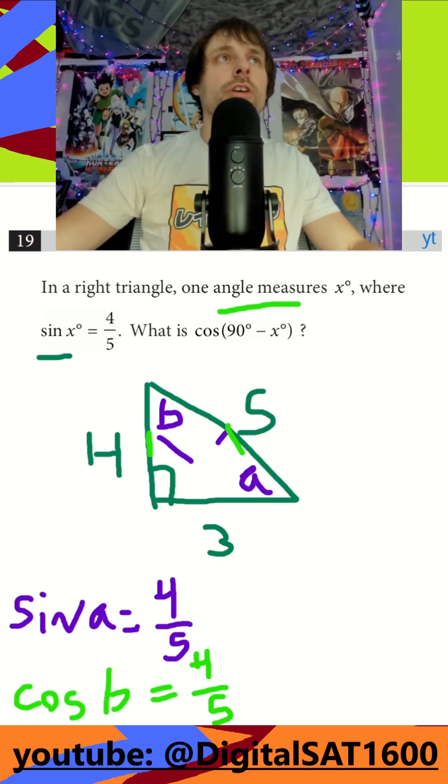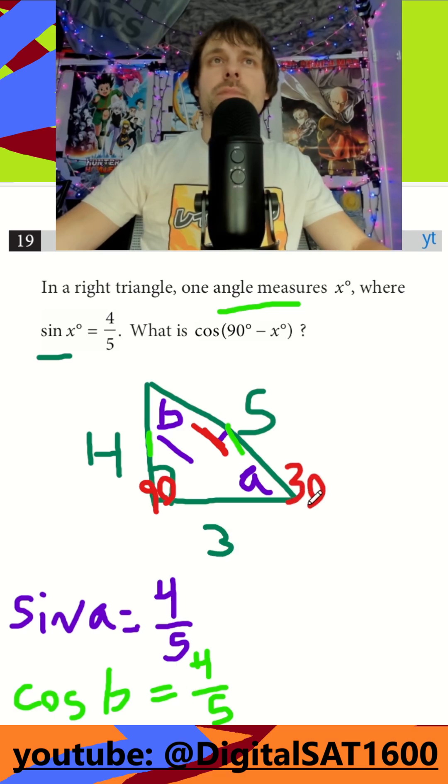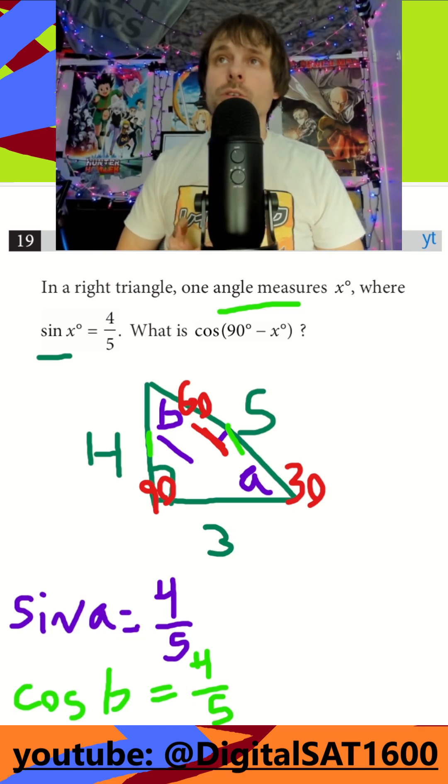So again, in our little right triangle here, if this is 90, then A and B have to also add up to 90. So no matter what I make A, if I make A 30, B is going to be 60. If I take the sine of one, it's always going to be the cosine of the other angle.